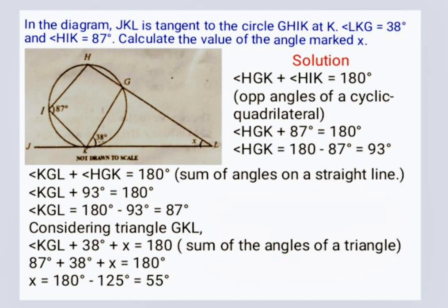Angle HGK is equal to 180 minus 87 degrees which is 93 degrees. Then angle KGL plus angle HGK is equal to 180, sum of angles on a straight line.